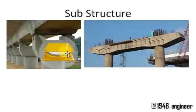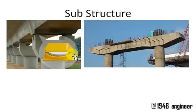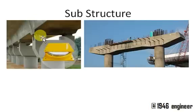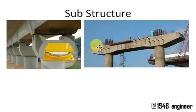Next, we have the substructure. The entire superstructure is based on bearings. These bearings provide angular or linear movement because bridges carry very dynamic loads from vehicles. To reduce the impact on the pier cap, these bearings act as middle members. The superstructure rests entirely on these bearings, which sit on the pier cap. This portion is called the pier cap.